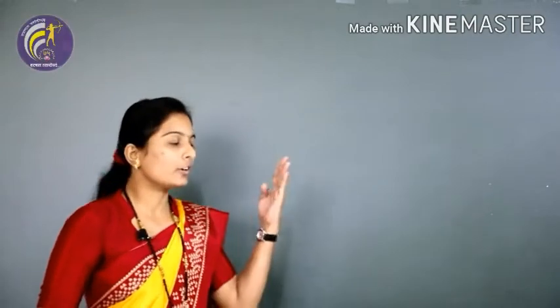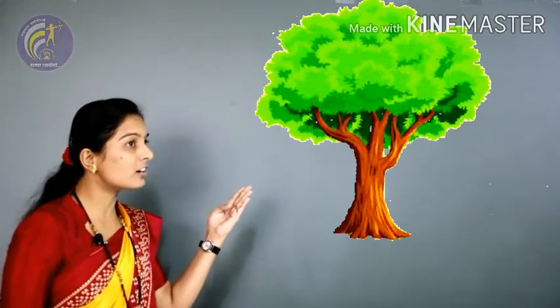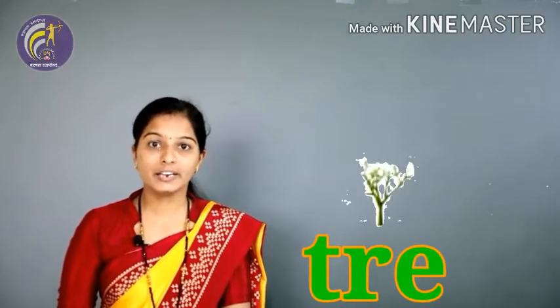What is this? This is a tree. T, R, E, E. Tree. Tree means Jhad.